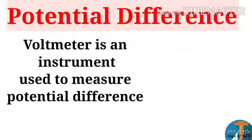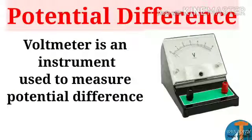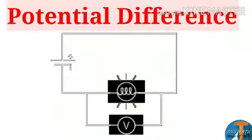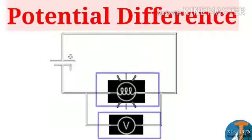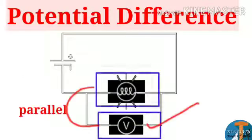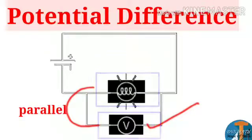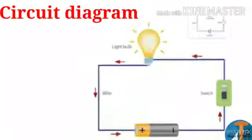We use a voltmeter as an instrument to measure the potential difference, and it is always connected in parallel. If we consider a simple electric circuit, here we have a voltmeter and it is connected to a bulb in parallel.